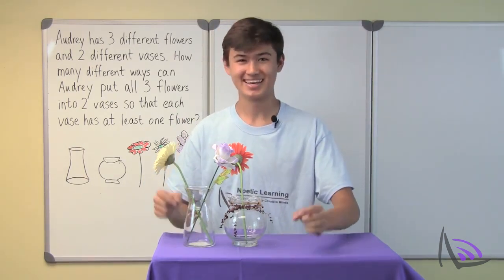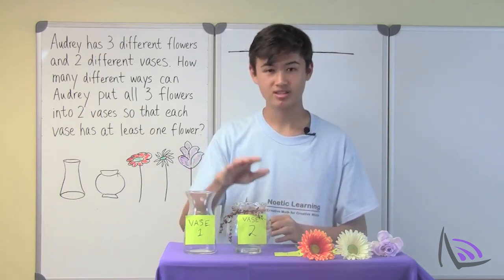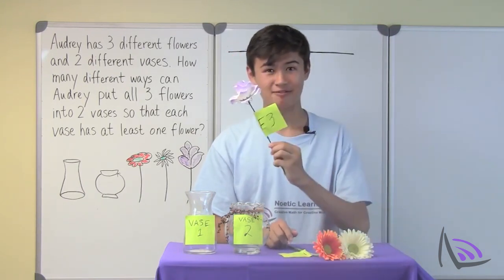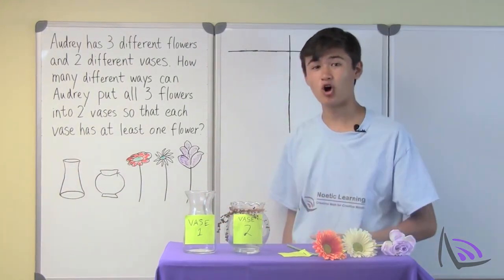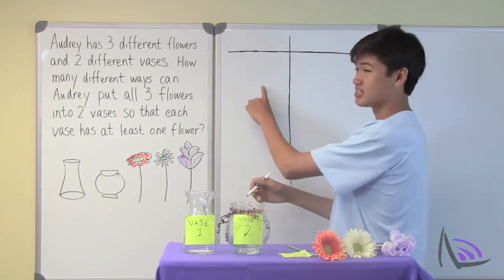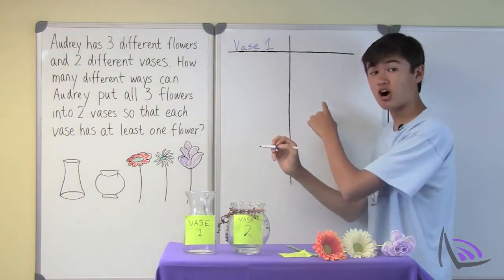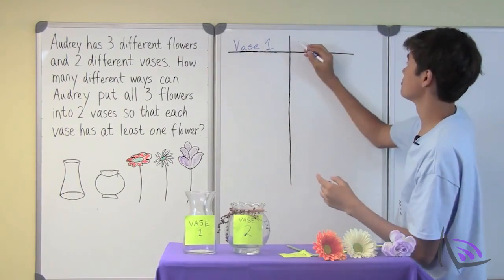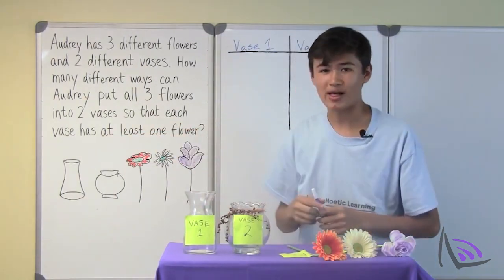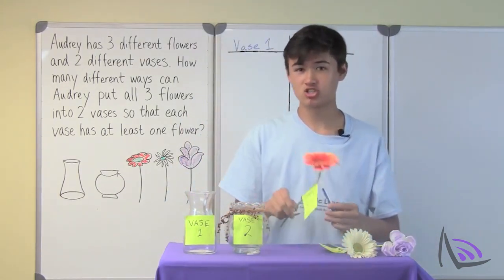Let's get organized. I'm not a very good drawer, so I labeled all the objects by number. This is vase one and this is vase two. The orange flower is F1, the white flower is F2, and the purple flower is F3. We're going to use a list to keep track of all the different ways we can put all three flowers into the two vases so that each vase has at least one flower. In one column we'll track what's in vase one, and in the other column what's in vase two. Let's start by seeing all the scenarios when we put one flower in vase one.